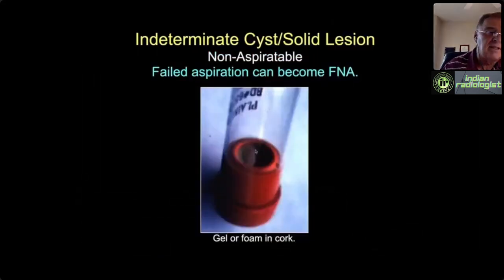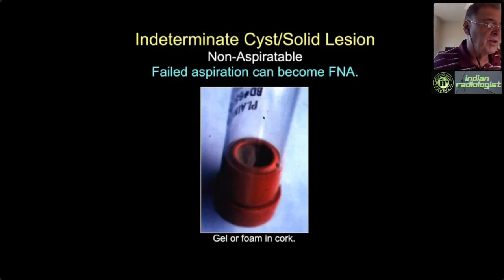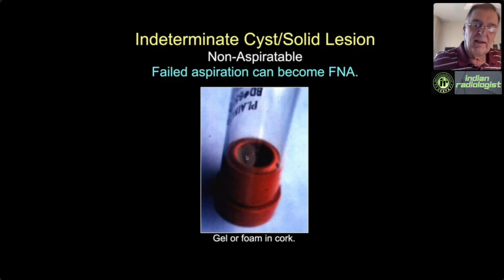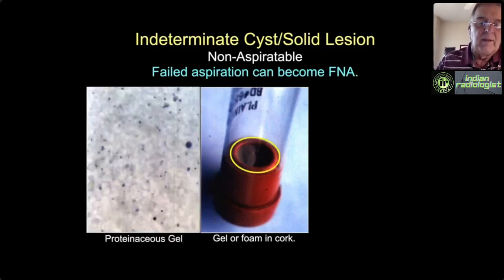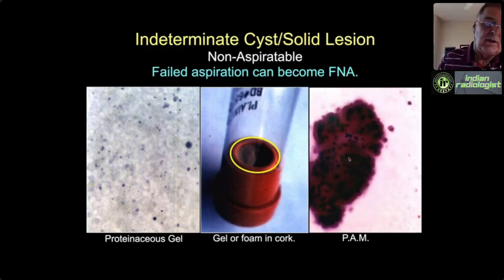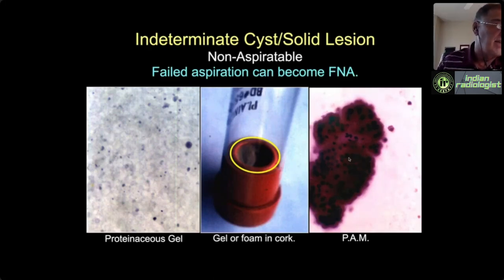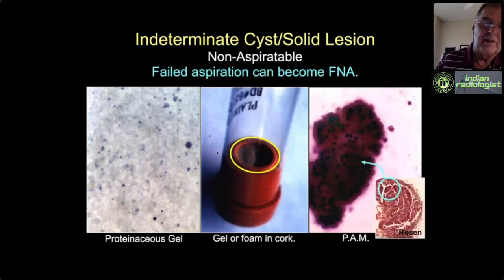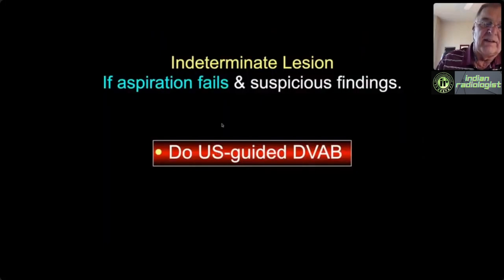When aspirating viscous fluid, I use a vacutainer system and change needle size as needed. For very viscous fluid, I use a 30cc syringe—the fluid may be too viscous to show up in the glass tube, so check the cork where you'll see green mucousy or white foamy material. Smearing it gives either acellular debris or papillary or apocrine metaplasia, turning a failed aspiration into an FNA. I don't generally like FNA in the breast, but it's a satisfactory fallback to prove it's just apocrine metaplasia. If all that fails, we go to ultrasound-guided vacuum-assisted biopsy—which is why aspiration is my least favorite method.